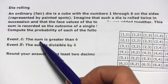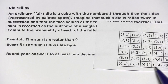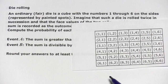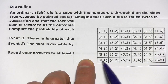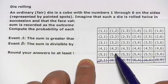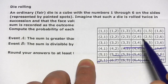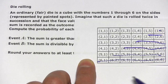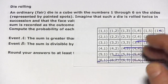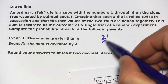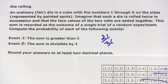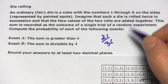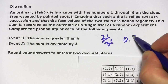If we want to find the probability that the sum of the two is greater than 6, we can just count the number of boxes where the sum is greater than 6. So 6 and 1 gives 7, 5 and 2 is 7, and counting all the outcomes with sum greater than 6, we get 6 plus 5 is 11, plus 4 is 15, plus 3 is 18, plus 2 is 20, so 21 different outcomes have a sum greater than 6. We take 21 divided by 36, and to two decimal places that's 0.58.